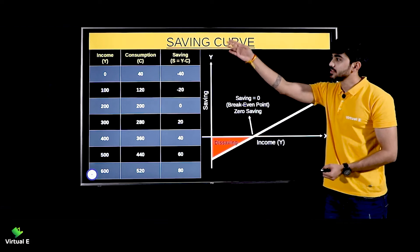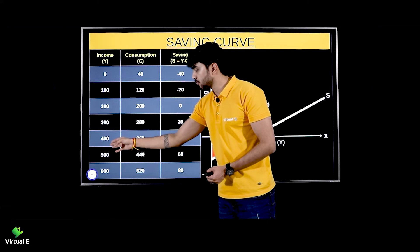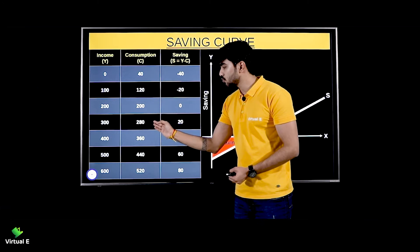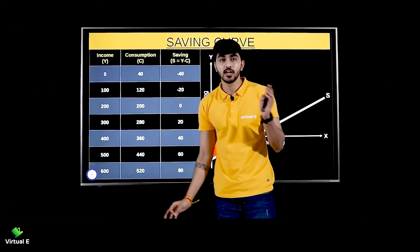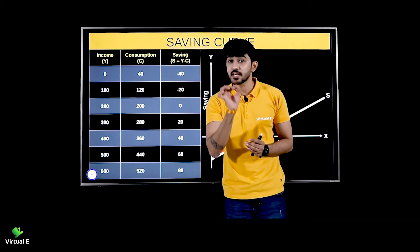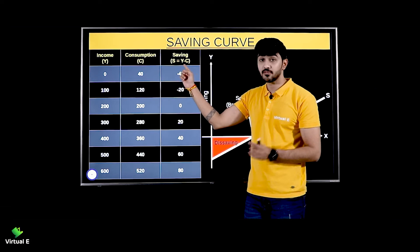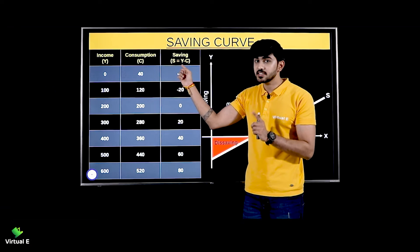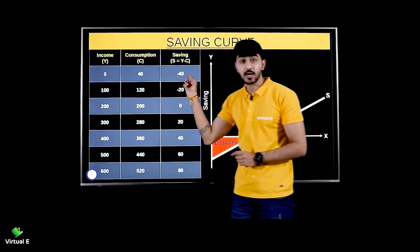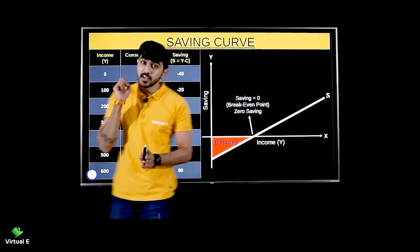Let's look at a sum so you understand better. There are different levels of income: 0, 100, 200, 300, 400, 500, 600. The corresponding consumption values are: 40, 120, 200, 280, 360, 440, and 520. Now, the formula for saving is income minus consumption, S = Y - C. So let's quickly calculate savings: 0 minus 40 gives minus 40 — that means income was zero but we were still consuming, so savings is negative.